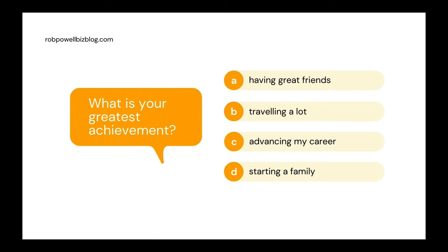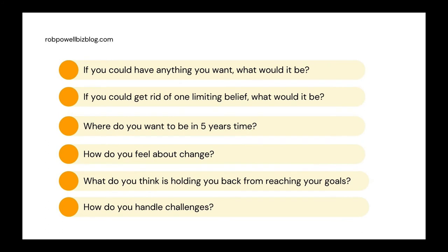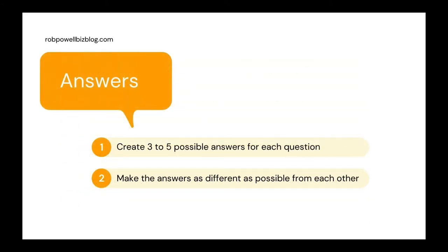Here are some more examples of quiz questions that reveal something about your quiz taker's personality: one, if you could have anything you want, what would it be? Two, if you could get rid of one limiting belief, what would it be? Three, where do you want to be in five years' time? Four, how do you feel about change? Five, what do you think is holding you back from reaching your goals? And six, how do you handle challenges? Try to include five to ten questions — fewer than five and your quiz will seem thin, but more than ten and people will get tired and give up. Create three to five possible answers for each question, make them as different as possible from each other, as this makes it easier to choose and helps the quiz taker get a perspective on themselves.